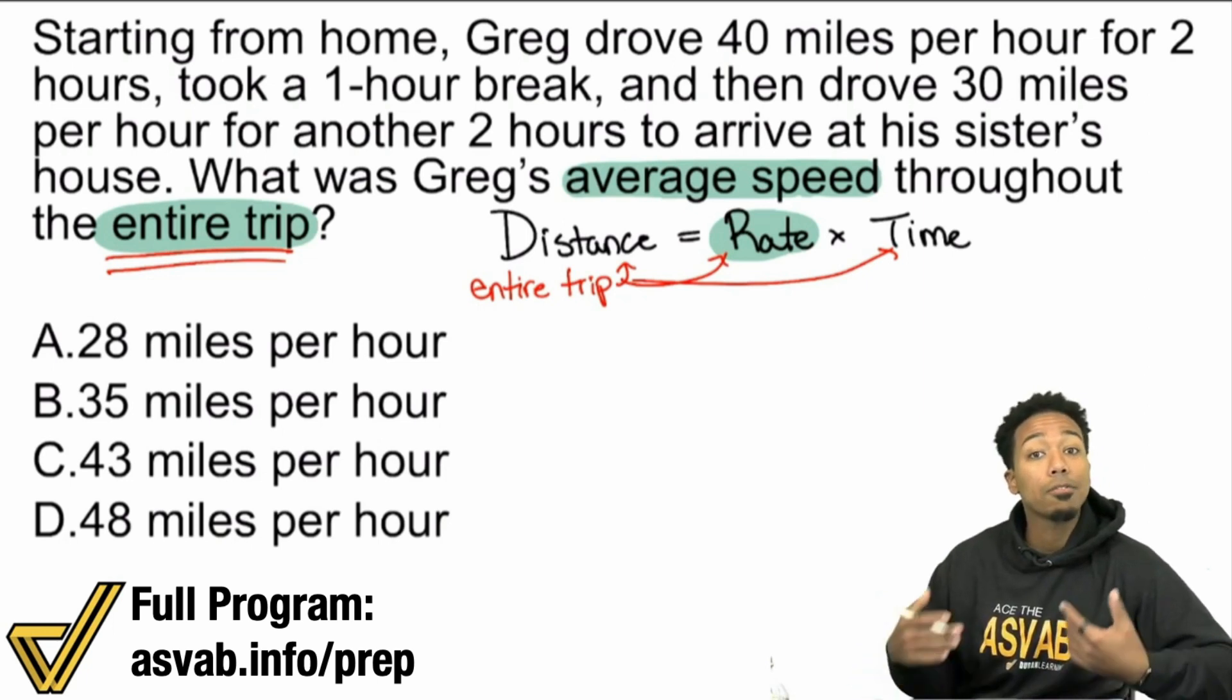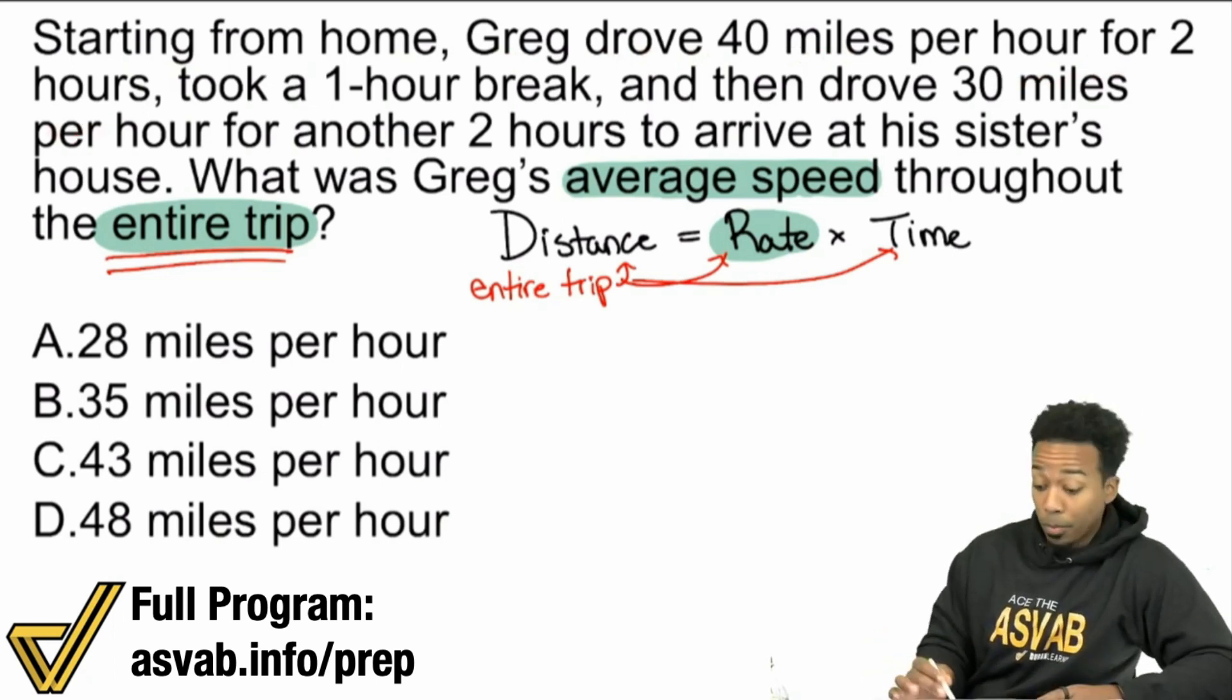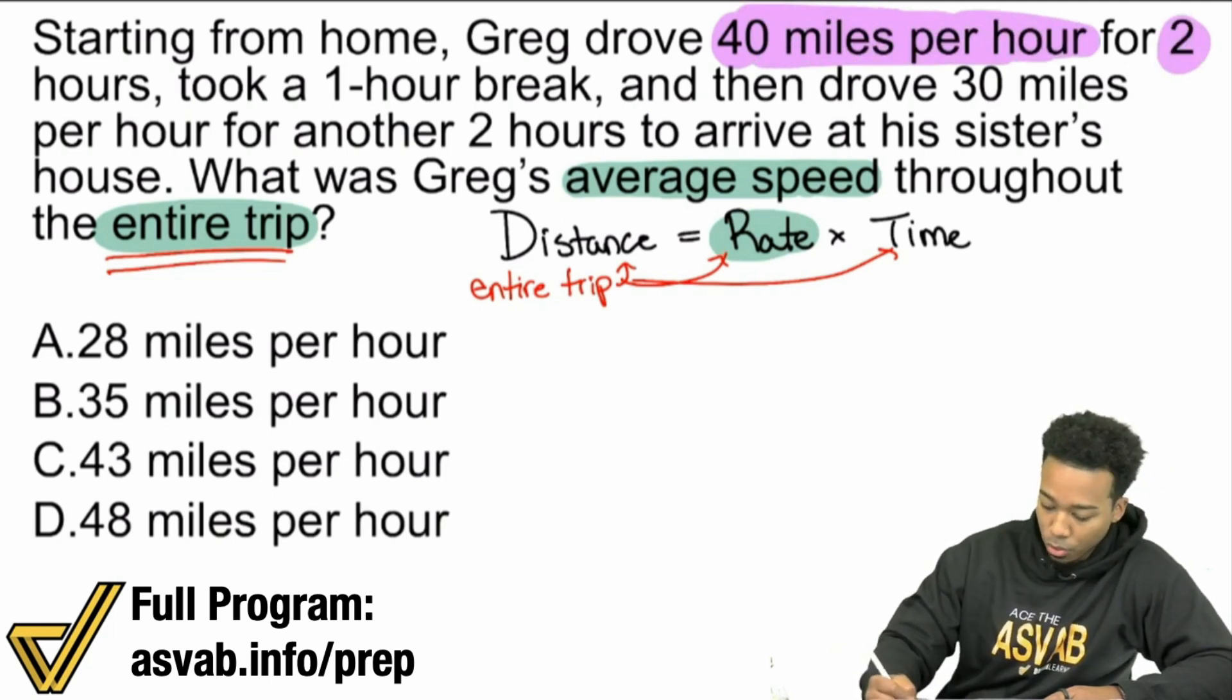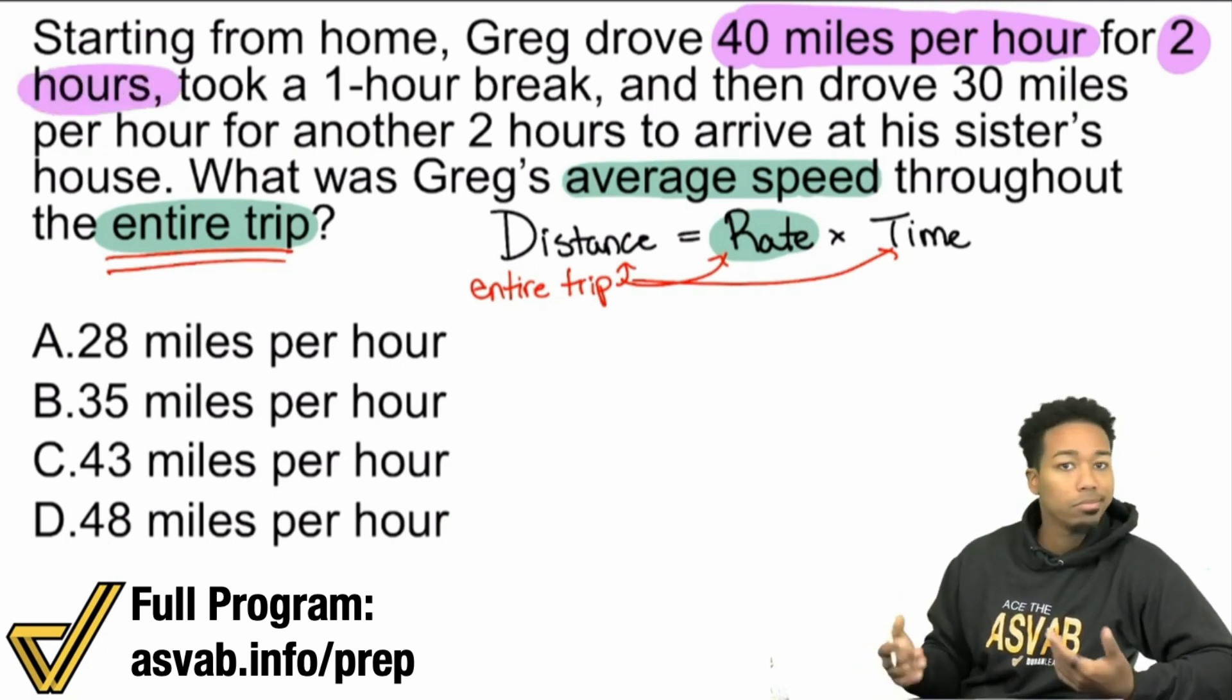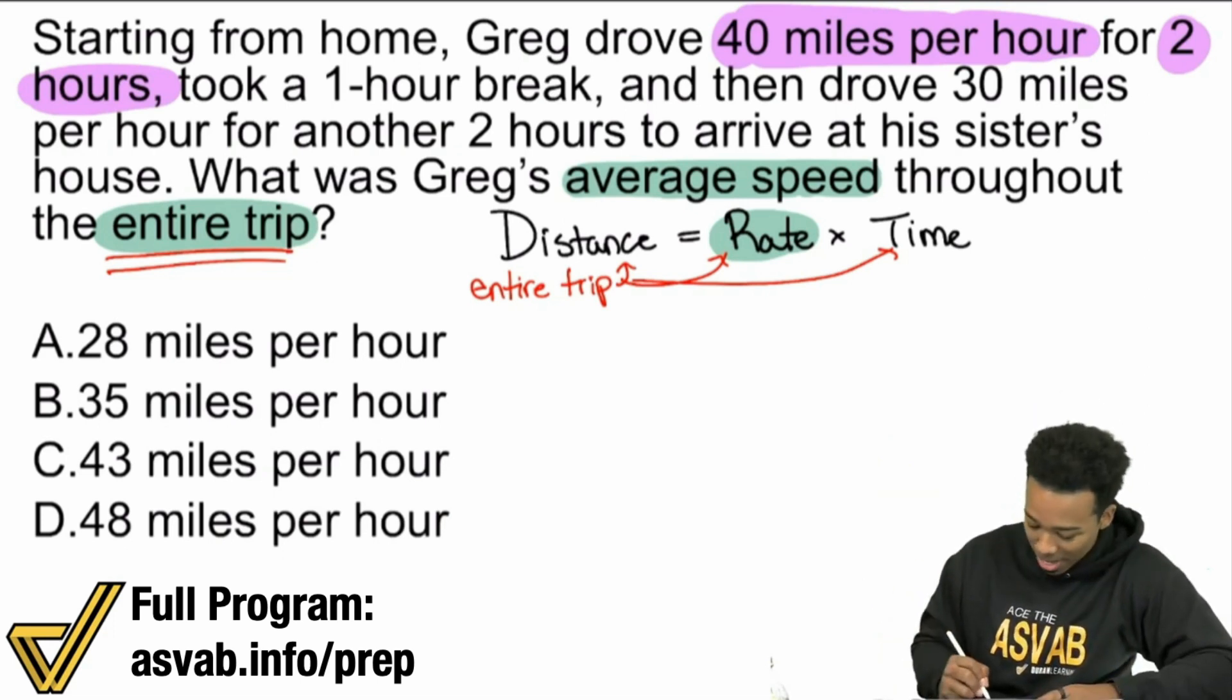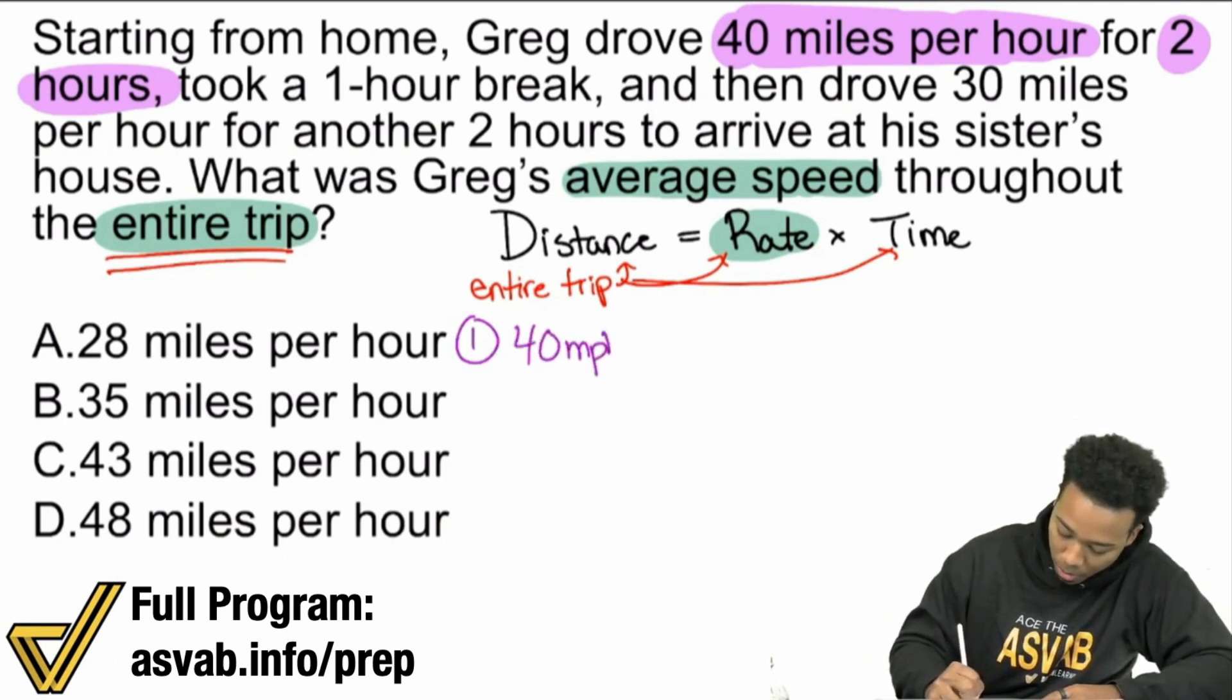Let's go ahead and take a look at the information we have so we can start piecing things together. Starting from home, Greg drove 40 miles per hour for two hours. We already have a rate given to us, miles per hour. 40 miles per hour. Then it says for two hours. Is that the entire trip? No, it's not. So you already see a rate, but it's not the whole trip. The first part of the trip, we see 40 miles per hour for two hours.